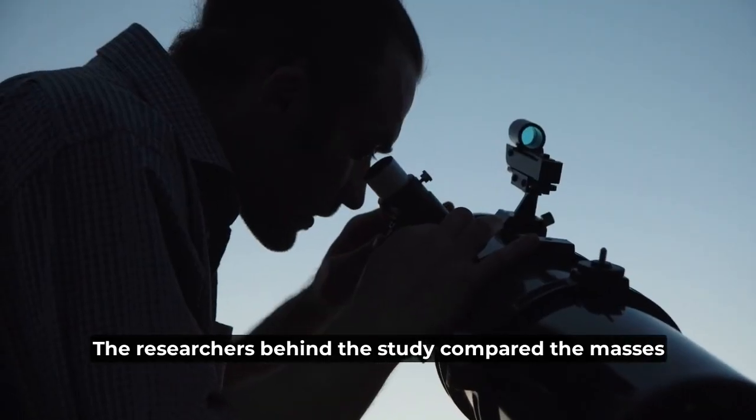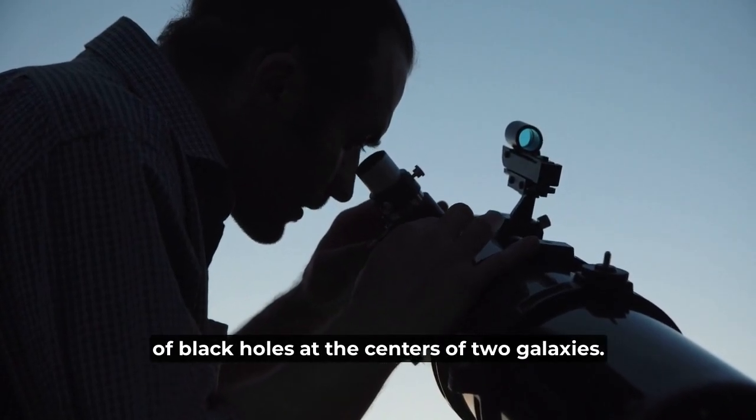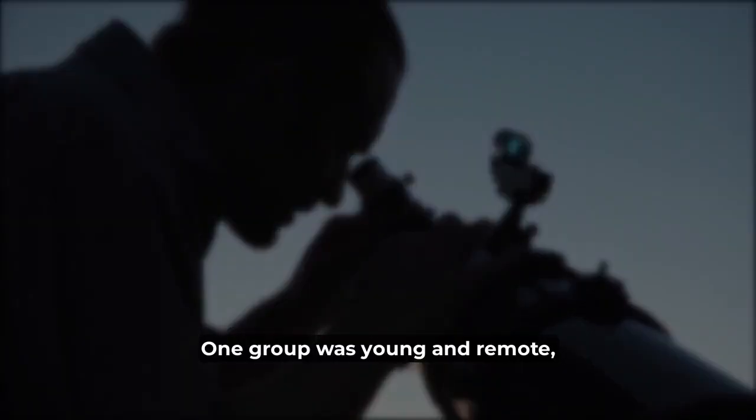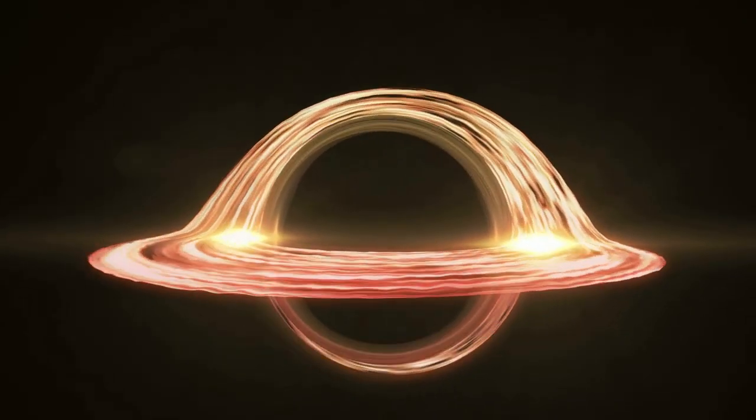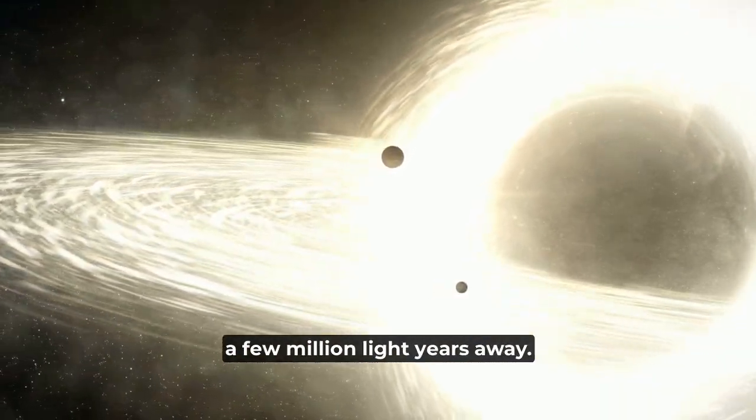The researchers behind the study compared the masses of black holes at the centers of two galaxies. One group was young and remote, with light that arrived 9 billion years ago, while the other was older and sat only a few million light years away.